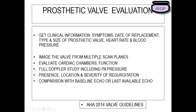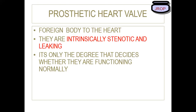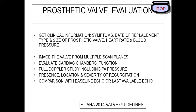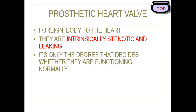Image the valve from multiple scan planes to look for thrombus or pannus. Evaluate cardiac chamber size and function. Perform a full Doppler study including PA pressures. Assess presence, location, and severity of any regurgitation — determine whether it is coming from inside or outside the valve (paravalvular). Compare with the baseline echo or most recent available echo. A prosthetic heart valve is a foreign body — intrinsically stenotic and leaking; the degree determines normal versus abnormal function.